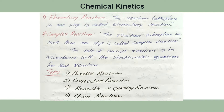That slowest step is called the rate-determining step. When we talk about complex reactions, we come across different types, and the kinetic studies will vary depending on the type of complex reaction involved. The rate of the overall reaction is in accordance with the stoichiometric equation. There are broadly four types of complex reactions.